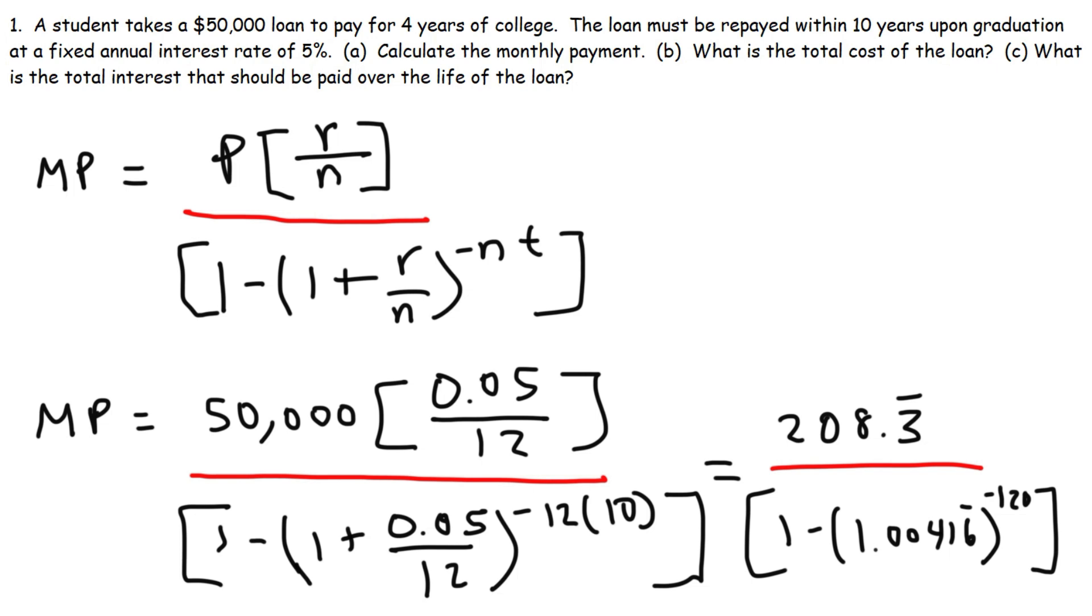So you can plug in the rest and get the final answer. So 208.3 repeating, or you can write that as 208.333333, divided by. Now make sure you use parentheses and an extra set of parentheses to get this right. So if we divide that by parentheses, 1 minus parentheses, 1.00416, and then since it's repeating, you need to add a few more sixes after that. Close parentheses, raise it to the negative 120. And don't forget to close the parentheses an additional time. The final answer that you should get is $530.33.